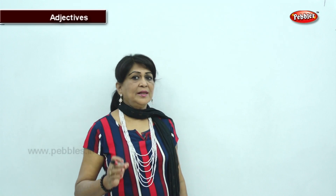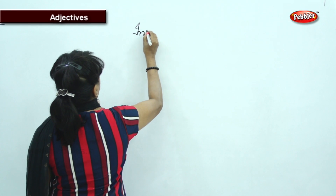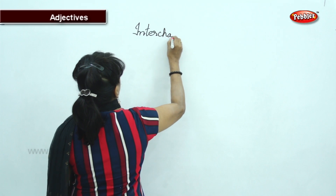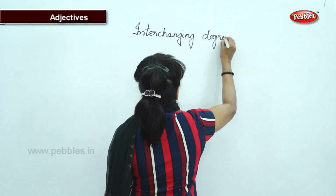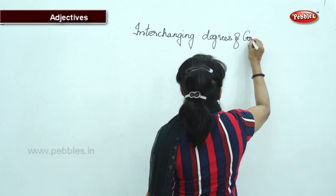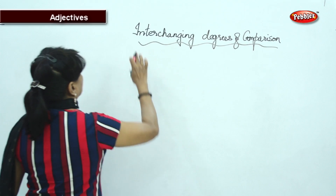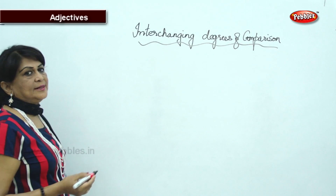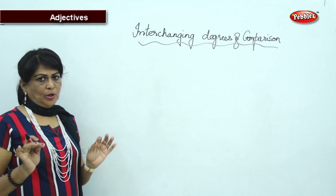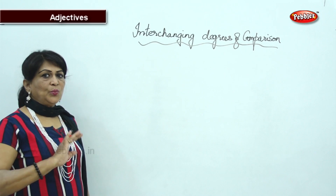Now we are going to do interchanging of degrees of comparison. I will teach you how to do it and then I will give you a short test. They may give you this as interchanging or also as transformation of sentences. If I give you one positive degree, I will tell you how to change it to comparative degree and superlative degree without changing the meaning.